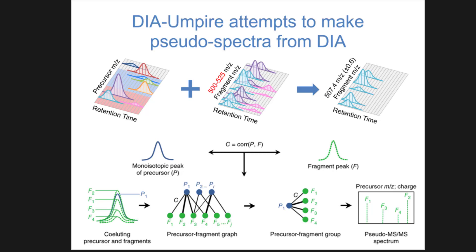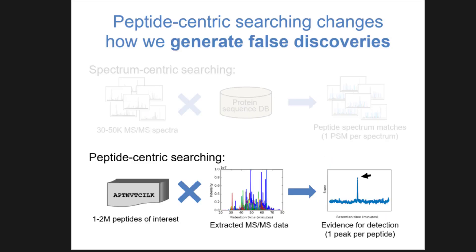It would actually be sort of interesting to just incorporate a database search engine at the same time and search this natively. That's effectively what PLGS does, and maybe one of the reasons why that method has worked well for Waters. They also have a lot tighter control over their data in general because they're the instrument vendor working on the same software. But that's all I'm going to talk about for spectrum-centric searching.